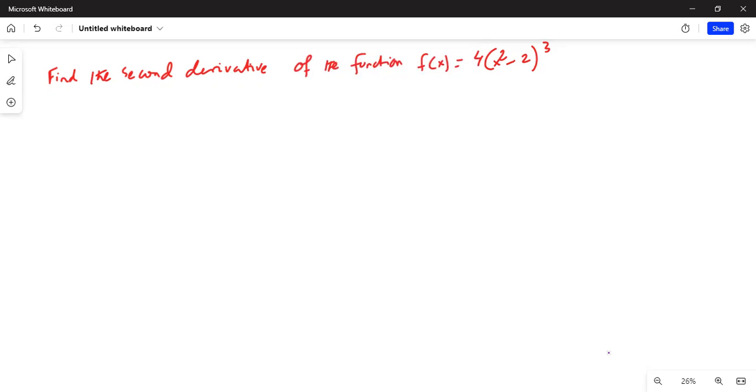So let's find the second derivative of the function f(x) is equal to 4 times (x² - 2) in parentheses, whole thing raised to the power of 3 or exponent 3.